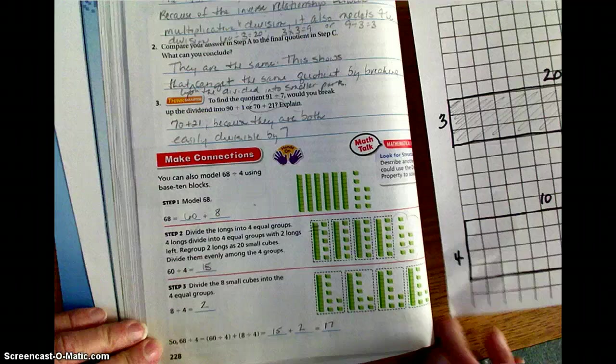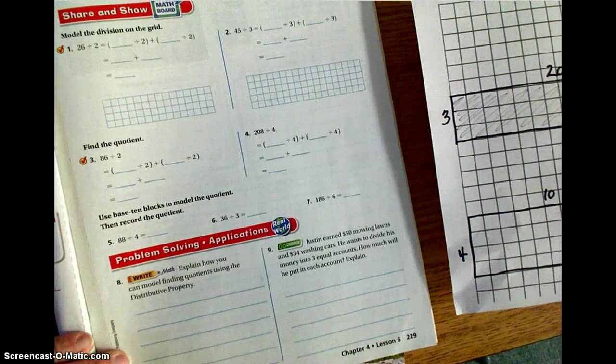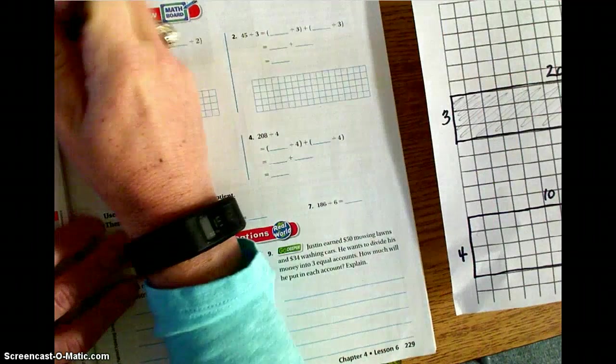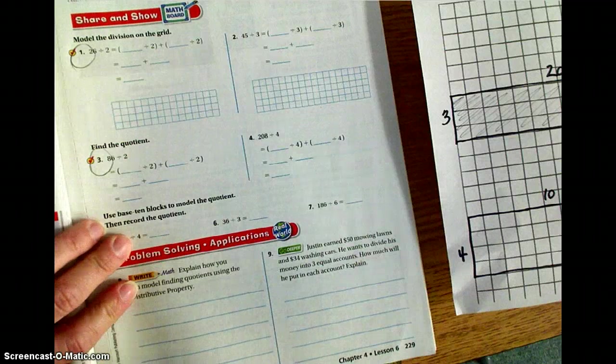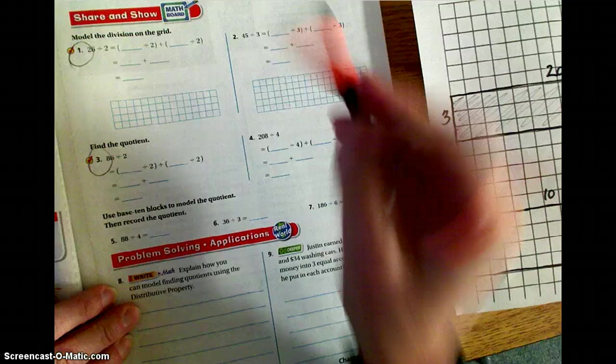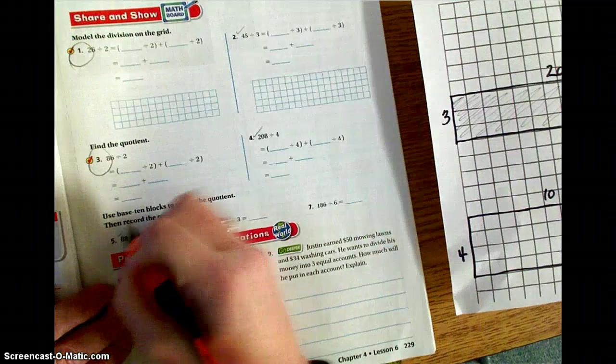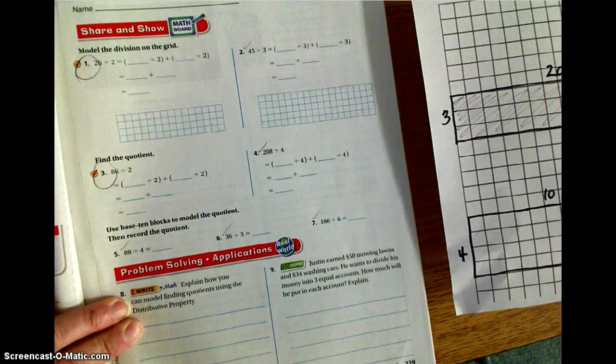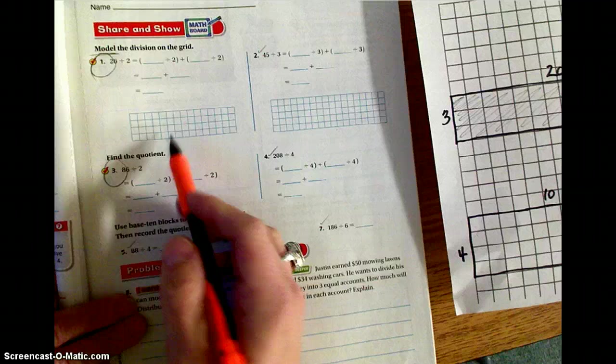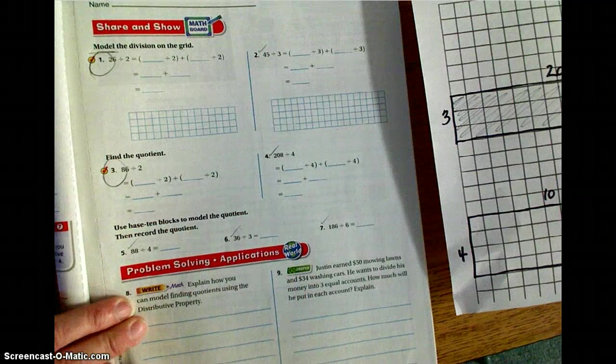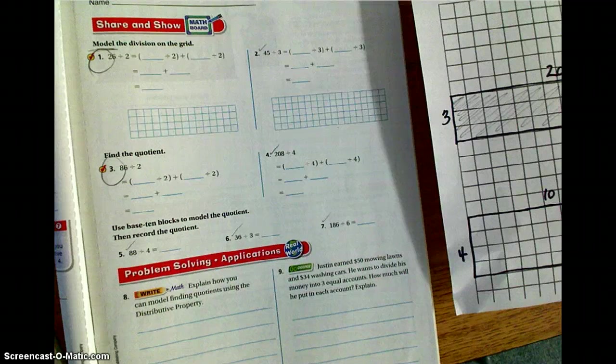So those are two different ways that you can use to solve division problems. I'm going to have you turn to page 229. On the share and show, you're going to complete number 1 and number 3 first. Once those are complete, and if you still have time left, you're going to work on numbers 2, 4, 5, 6, and 7. Please understand that if it says model, that means you need to use the grid to show the division problem.